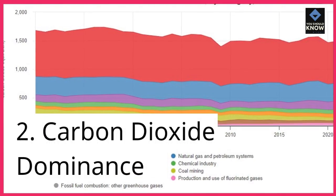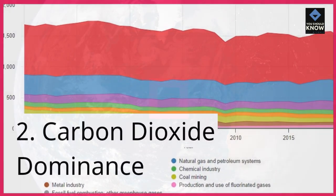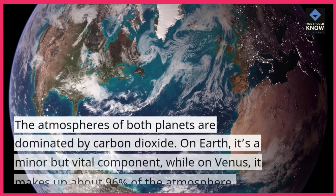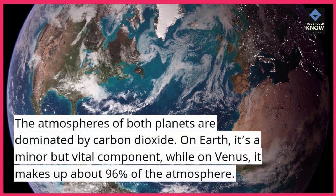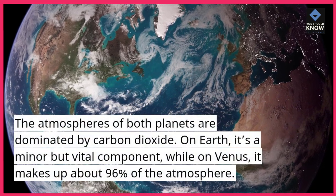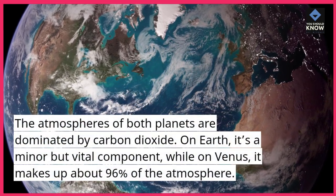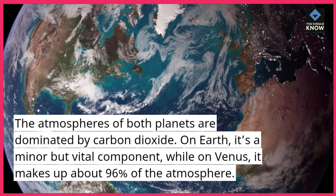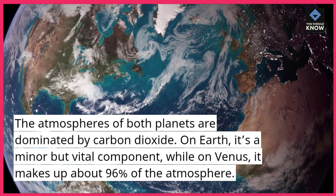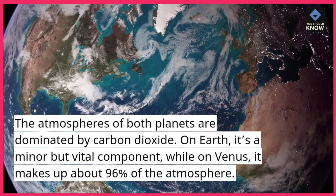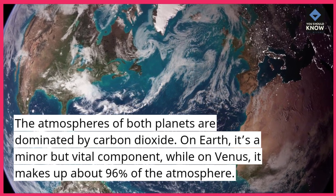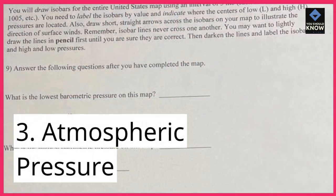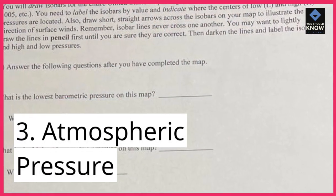2. Carbon Dioxide Dominance: The atmospheres of both planets are dominated by carbon dioxide. On Earth, it's a minor but vital component, while on Venus, it makes up about 96% of the atmosphere.